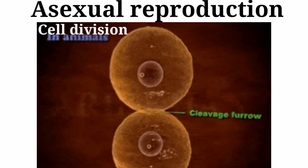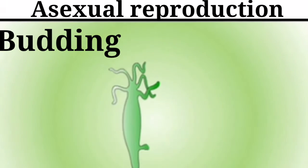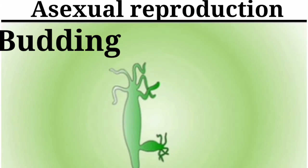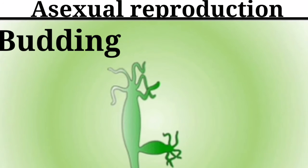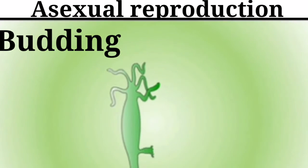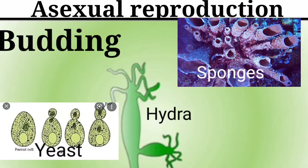The second method is budding. Budding is a form of asexual reproduction in which a new organism develops from an outgrowth or bud due to cell division at a particular site. Budding occurs in sponges, hydra, yeast, etc.